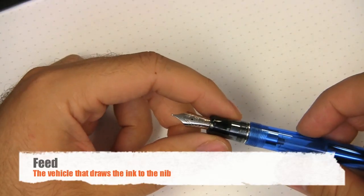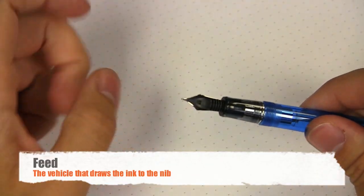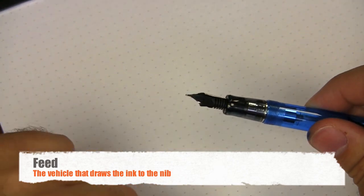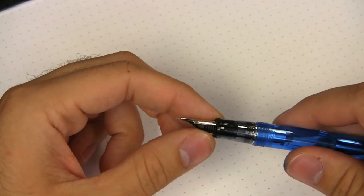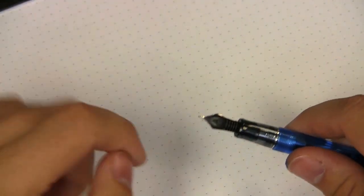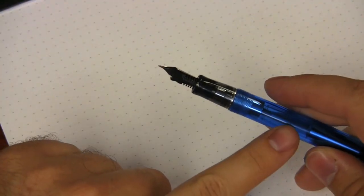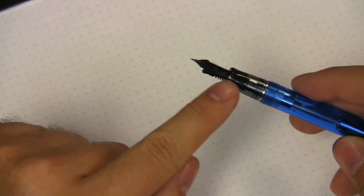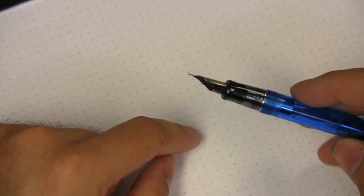The feed is the part that backs up to the nib. The feed is this black part right here. It's not always black, it can be different colors depending on the manufacturer. It can be different styles, it can look differently. But the most important part is that the feed is the part that gets the ink from the pen up to the nib so that you can write with it.